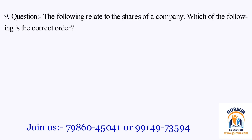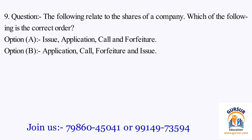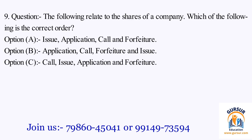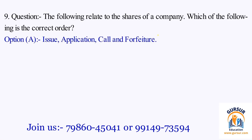Question number 9. The following relate to the shares of a company. Which of the following is the correct order? The option A is Issue, Application, Call and Forfeiture. The option B is Application, Call, Forfeiture and Issue. The option C is Call, Issue, Application and Forfeiture. The option D is Forfeiture, Application, Issue and Call. The right answer is Option A, that is Issue, Application, Call and Forfeiture.